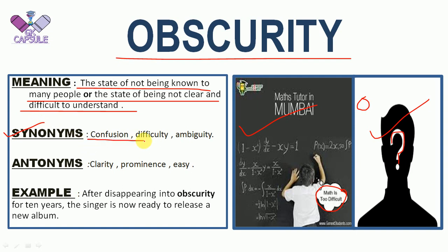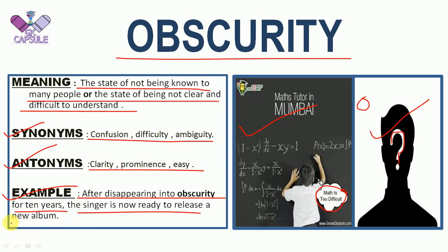Synonyms of OBSCURITY: confusion, difficulty, ambiguity. Antonyms: clarity, prominence, easy. Example: after disappearing into obscurity for 10 years, the singer is now ready to release a new album — meaning the singer was in a state where people didn't know him, and then he came back to release his album. So we call that an obscurity situation.